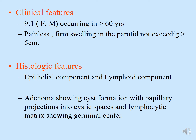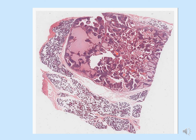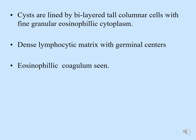This is the characteristic histopathological feature of Warthin's tumor — papillary cystadenoma lymphomatosum. On the histopathological slide, normal parotid tissue is visible, a well-defined fibrous capsule, and the tumor tissue showing pale eosinophilic areas and dark basophilic areas. The cysts are lined by bilayer tall columnar cells with fine granular eosinophilic cytoplasm, a dense lymphocytic matrix with germinal centers, and eosinophilic coagulum is seen.